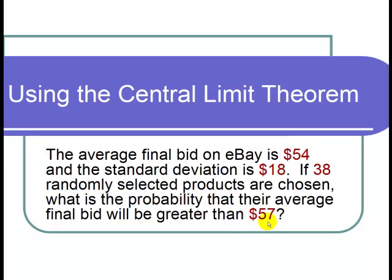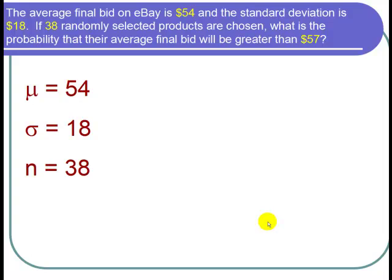So let's start by writing down the cast of characters. The average is $54, so mu is equal to 54. The standard deviation is $18, so sigma is equal to 18. We're selecting 38 products, so that's the sample size, n is equal to 38.